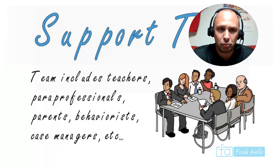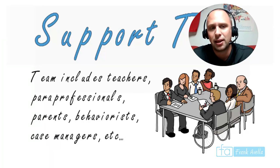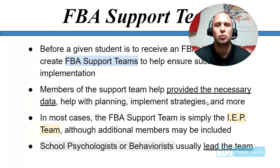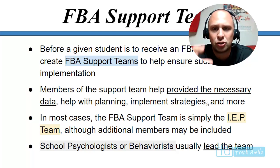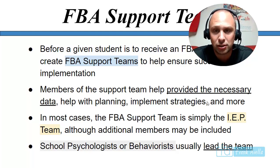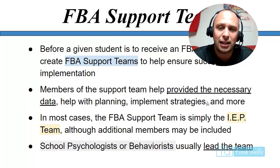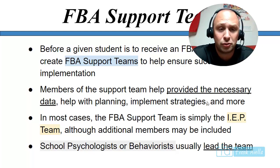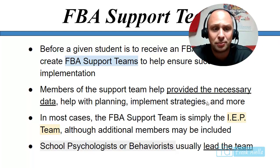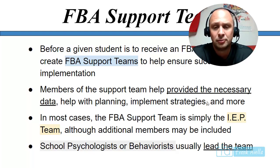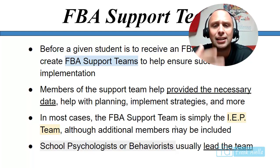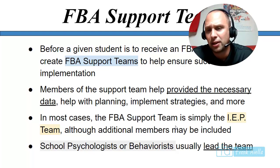Step one: create a support team. This is very important. It includes teachers, paraprofessionals, parents, behaviorists, and case managers. Before a student receives an FBA, this support team must be created to ensure successful implementation. Members contribute data, do planning, and implement strategies. In most cases, the FBA support team is simply the IEP team, but additional members may be included.